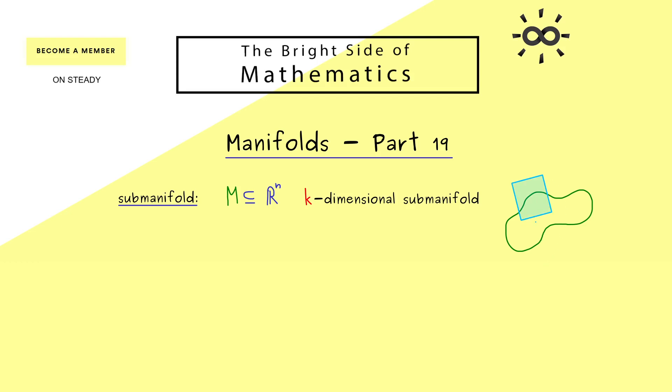Moreover, by the definition of a submanifold we already know we can choose charts that make the manifold flat. The picture always looks like that - locally we can flatten the manifold. Please don't forget, this map h goes from R^n into R^n. More precisely it goes from U into U' but both sets are subsets of R^n.